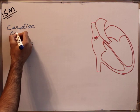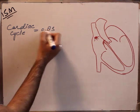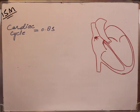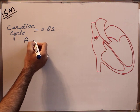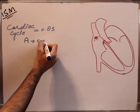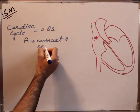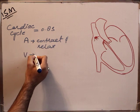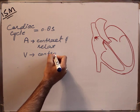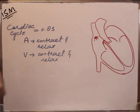The cardiac cycle is normally 0.8 seconds. 0.8 second is the time in which the atrium contracts first and then relaxes, and following this the ventricle also contracts and then relaxes.